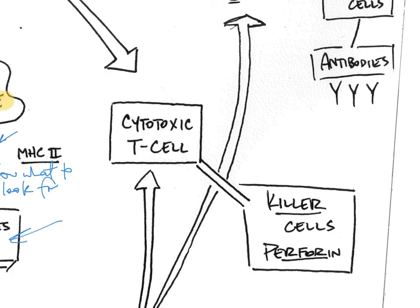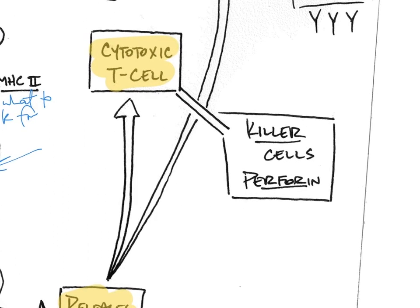First, cytotoxic T cells are produced. A cytotoxic T cell is one that will kill a cell. Essentially it comes in to the pathogen, lyses the cell membrane, breaks it open, and that kills the pathogenic cell. These cytotoxic T cells are the ones actually doing the work in your body — they are the ones who hunt down and destroy pathogenic cells.